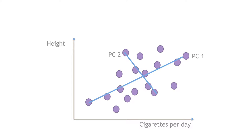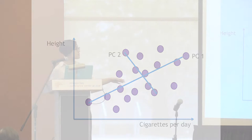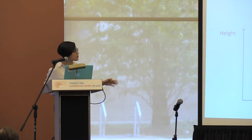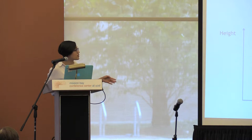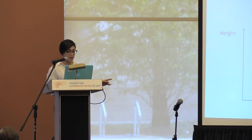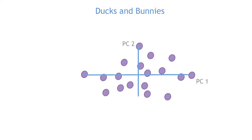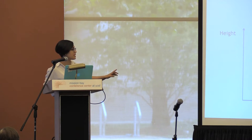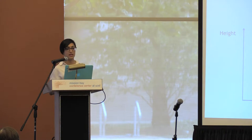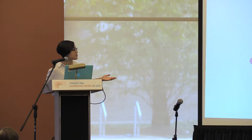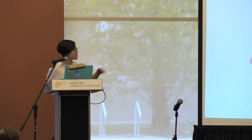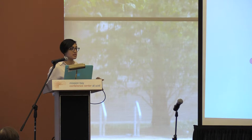Similarly, in our height and cigarettes per day example, we draw a line from the lowest to the highest point to identify the plane of greatest variance — that's principal component one. The vertical line represents principal component two. Just like the ducks and bunnies example, I rotated the whole thing. Then I do the same thing I did in the basic example: compress it onto the plane with the highest variance. That's all I'm doing.